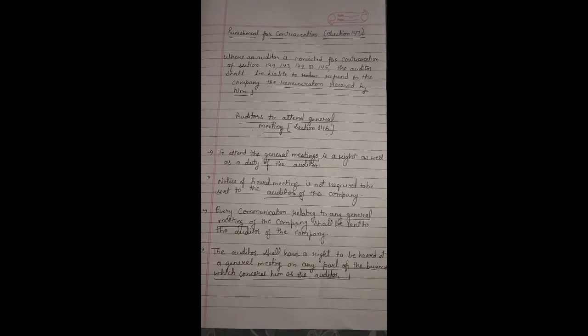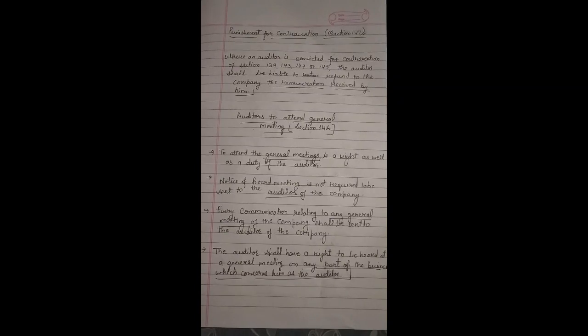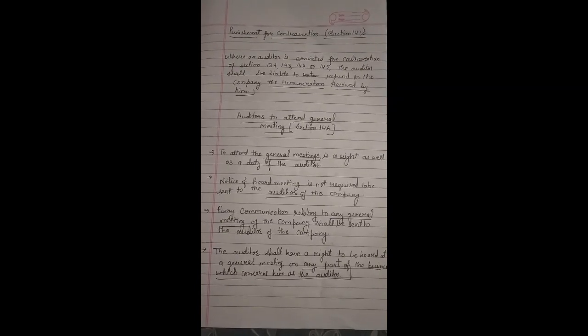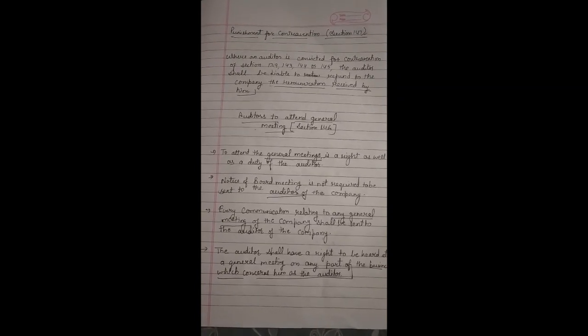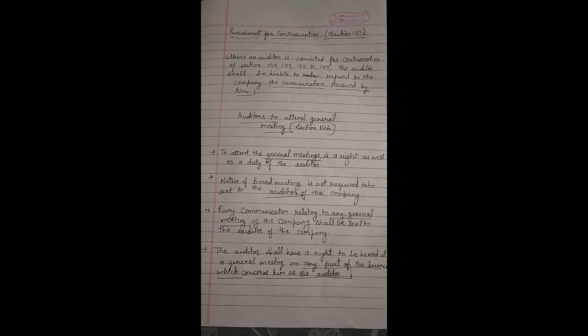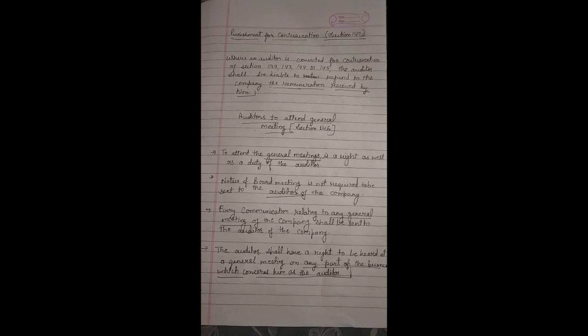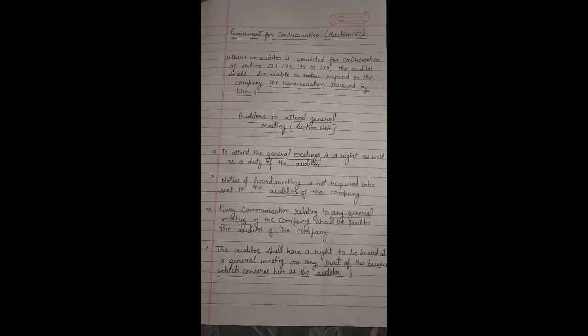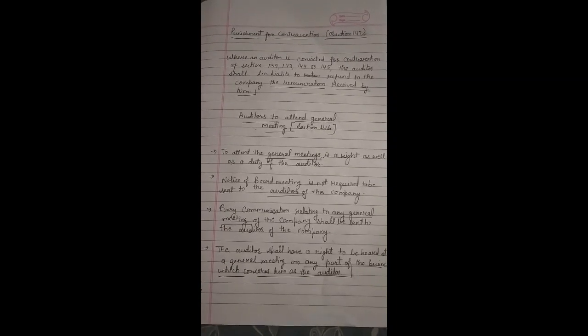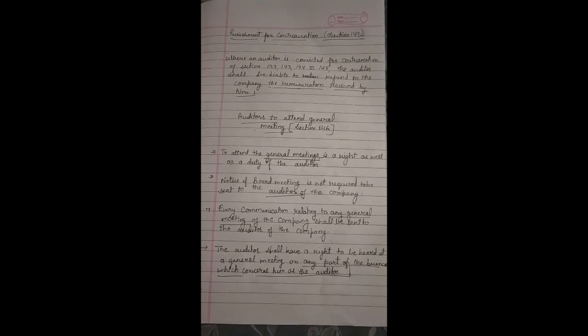Section 147 punishment for contravention. Where an auditor is convicted for contravention of section 139, 143, 144 or 145, the auditor shall be liable to refund to the company the remuneration received by him.